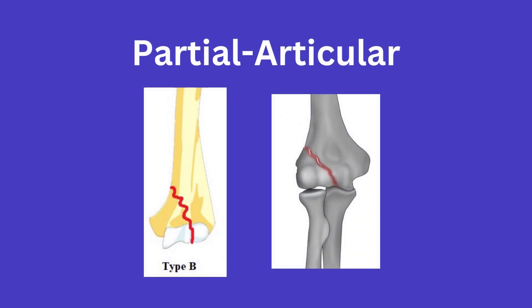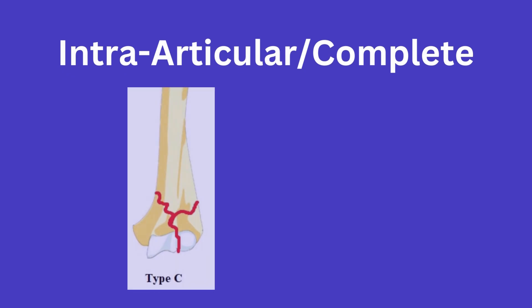Next is a partial articular fracture. This is a fracture in which there is articular surface involvement, however there is still a metaphysis-diaphysis connection. The way I learned this early on is if I could draw essentially an imaginary line from the articular surface to the shaft of the bone, then there was still some metaphysis-diaphysis continuation, and thus this was a partial articular or type B fracture.